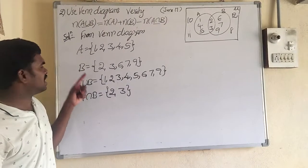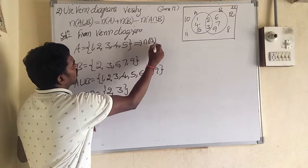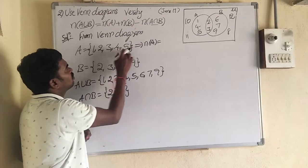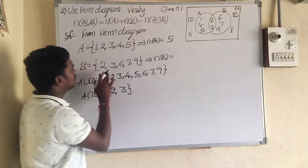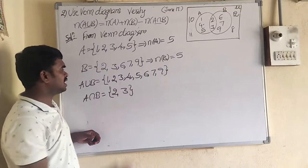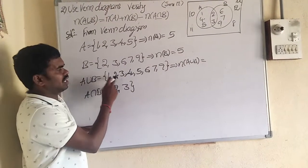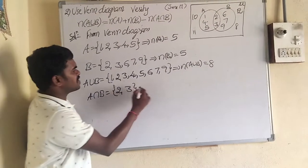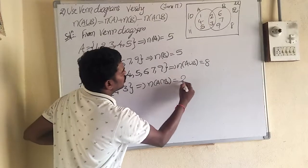Now, in set A, number of elements N of A equals 5. In set B, N of B equals 5. In set A union B, number of elements N of A union B equals 8. Number of elements in A intersection B equals 2.